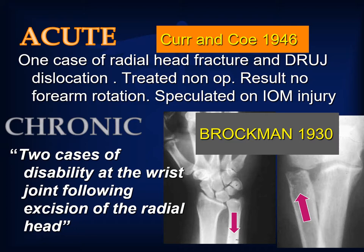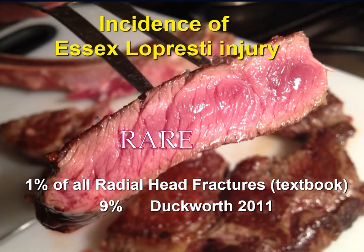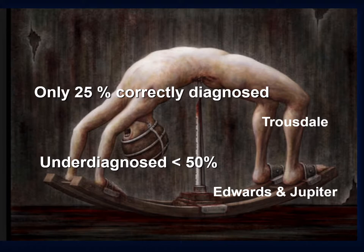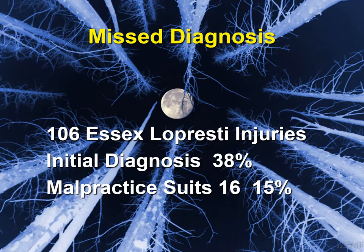The chronic scenario was defined 20 years before Essex-Lepresti by Brockman in 1930, who described two cases of disability at the wrist joint following excision of the radial head. The incidence of Essex-Lepresti injury is rare; most textbooks list it at one percent of all radial head fractures. Duckworth, due to more systematic analysis in 2011, thought it was closer to nine percent of radial head fractures. The acute injury is only correctly diagnosed a quarter of the time. Edwards and Jupiter thought it was underdiagnosed in more than 50% of cases. In our series of 106 consecutive Essex-Lepresti injuries, the initial diagnosis was made correctly in only 38%, and 15% of those cases resulted in malpractice suits because of their poor outcome.